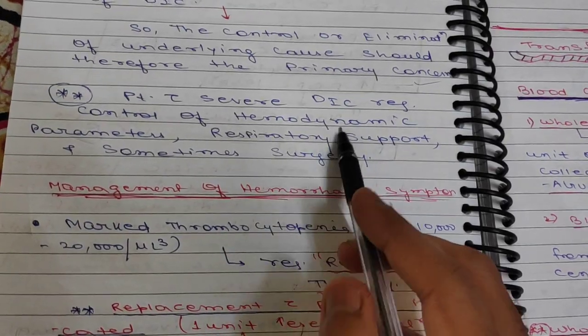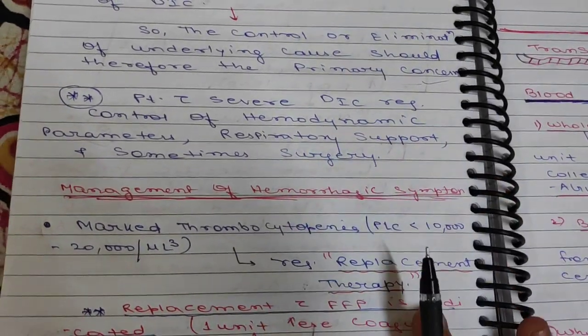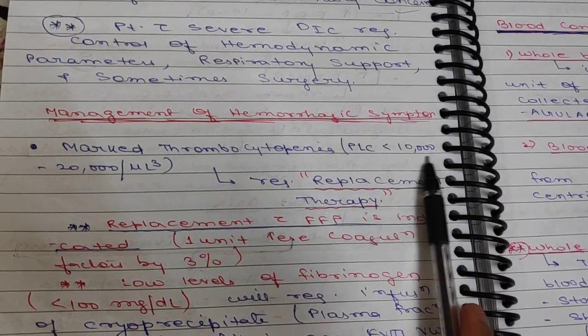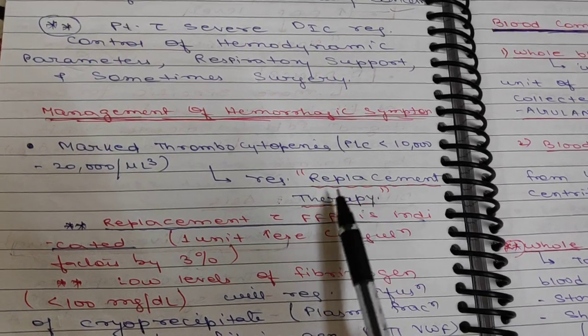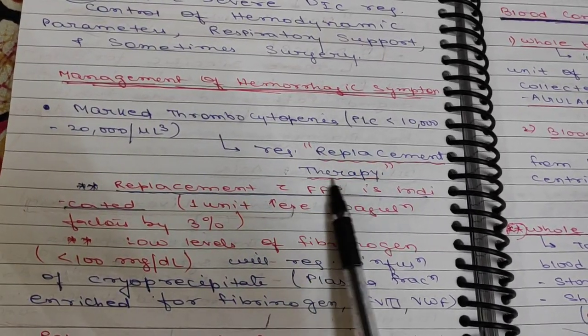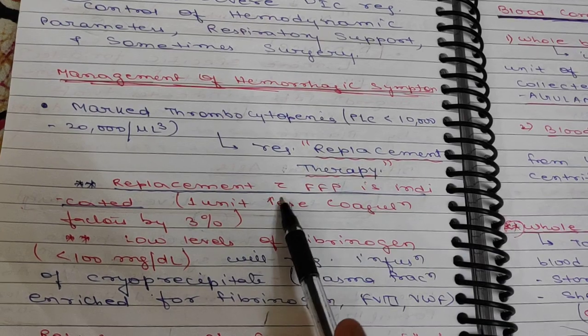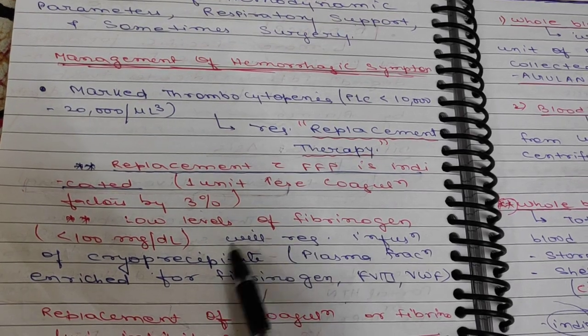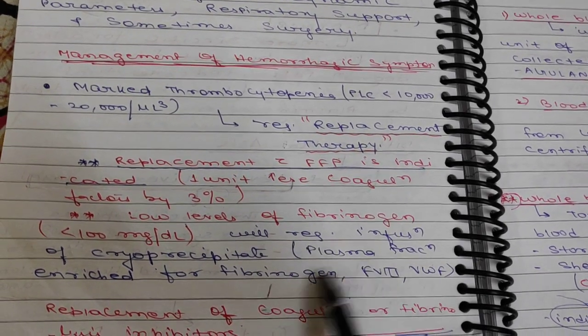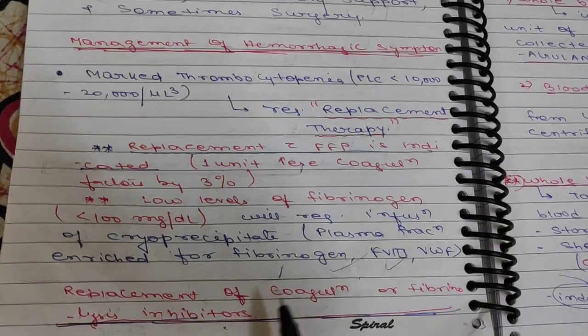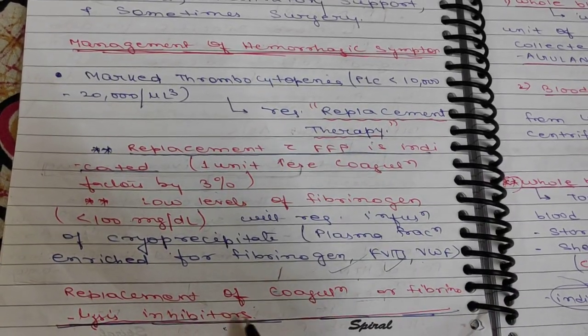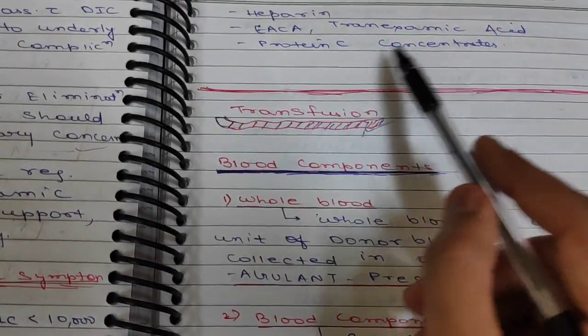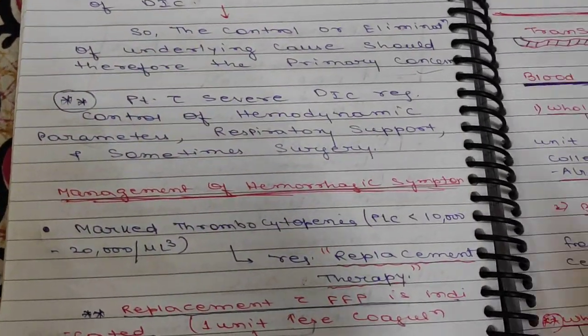For management of hemorrhagic symptoms, if there is marked thrombocytopenia less than 10,000 or 20,000, it will require replacement therapy. Replacement with fresh frozen plasma is indicated because one unit increases coagulation factors by 3 percent. Low levels of fibrinogen will require infusion of cryoprecipitate. Plasma fractions rich in fibrinogen, factor VIII, and von Willebrand factor, and replacement of coagulation or fibrinogen factors can also be given, such as fibrinogen, heparin, epsilon-aminocaproic acid, tranexamic acid, and protein C. This is all about DIC. Thank you.